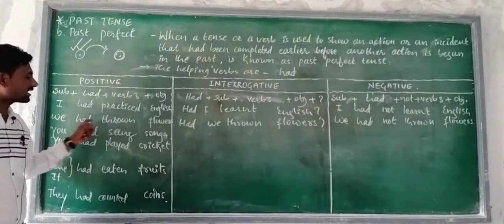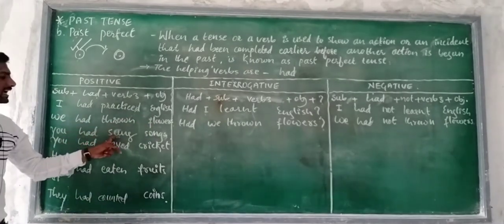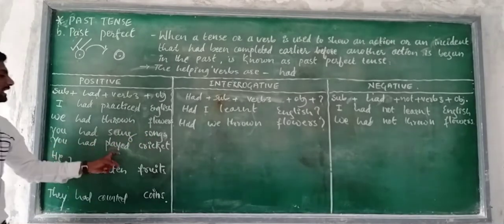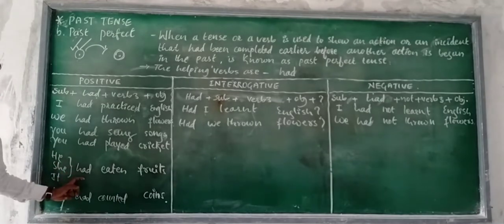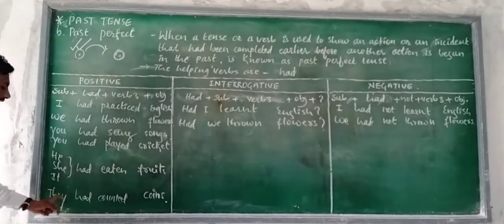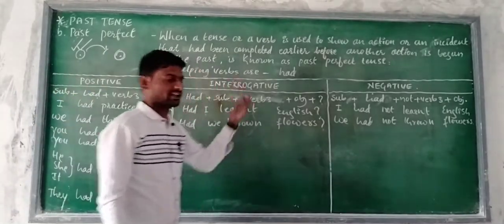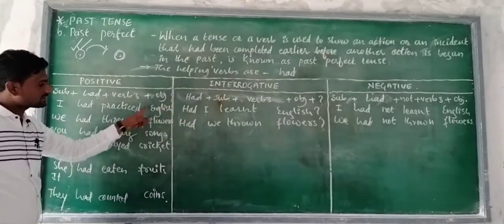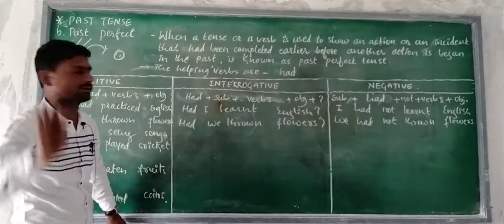More positive examples: 'We had thrown flowers. You had sung songs. You had played cricket. He/She had eaten fruits. They had counted coins.' Now for the interrogative — I have made two sentences and will give you the other four sentences as homework.